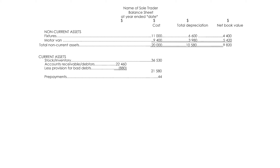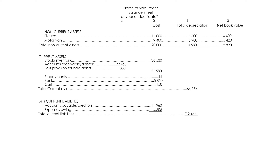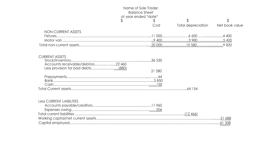Pre-payments, bank, cash. Total current assets. Less current liabilities: accounts payable or creditors, expenses owing. Total current liabilities. Working capital or net current assets.